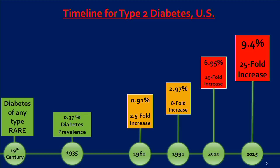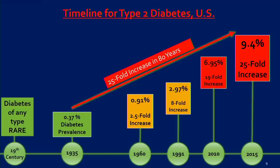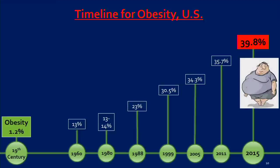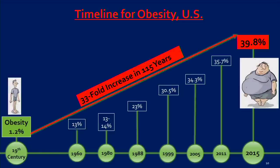Type 2 diabetes was rare in the 19th century and for all of history prior. By 1935, it's rising at 0.37%. By 2015, we're at 9.4% — a 25-fold increase in 80 years. Obesity, from 19th-century studies of prisoners in Nebraska and Texas, was 1.2% in men aged 18 to 80. By 1960, it was 13%; by 1988, 23%; by 2015, 39.8% — roughly a 33-fold increase over 115 years.